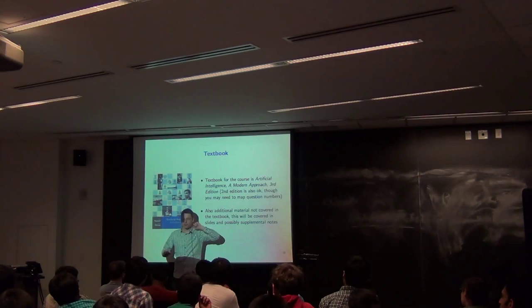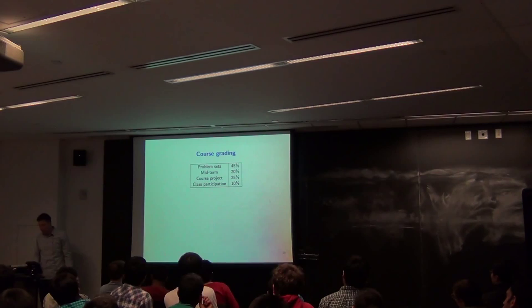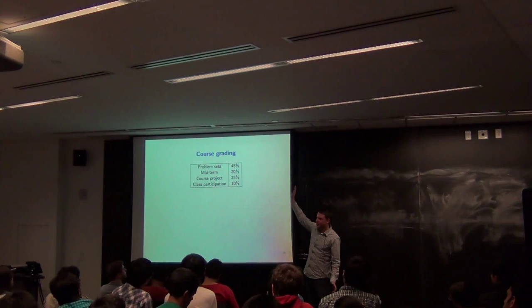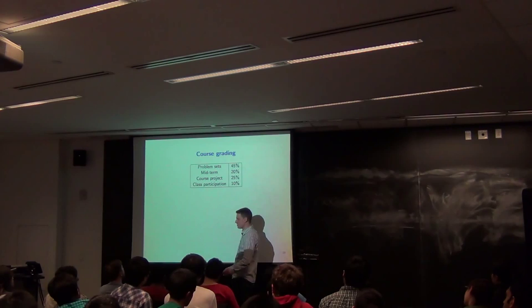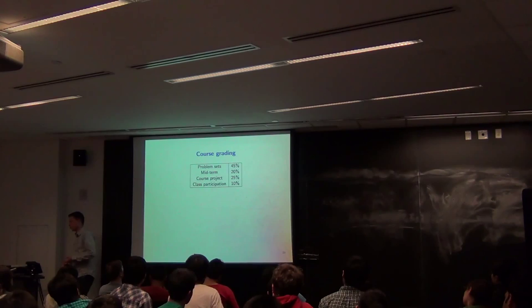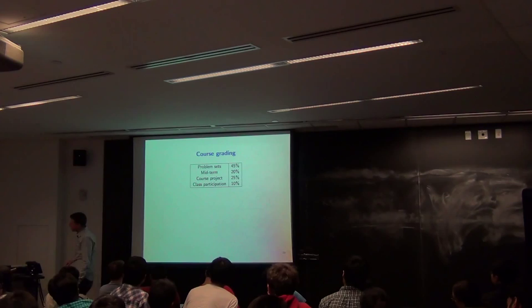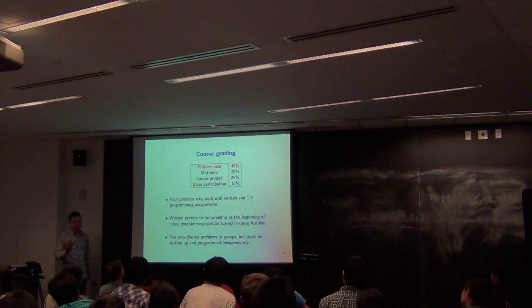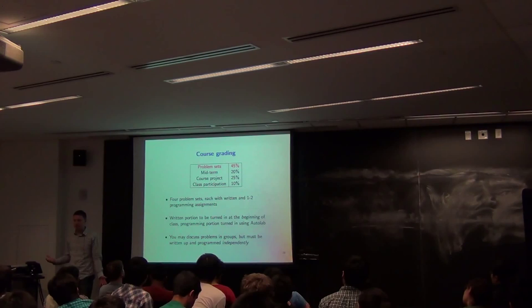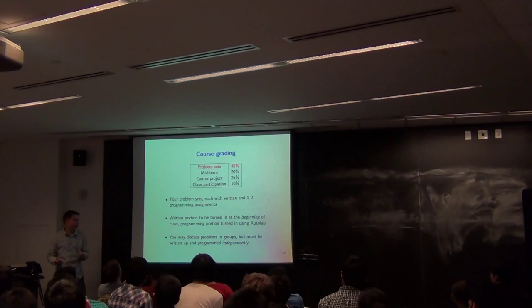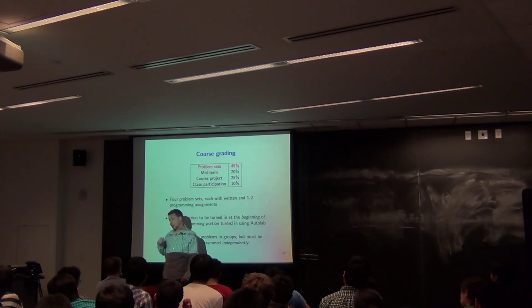The textbook is 'Artificial Intelligence: A Modern Approach' — the standard textbook for AI courses, used by roughly 50% of AI courses. It's a useful resource for reading up on what we cover, though we're not following it chapter by chapter, and some sections — like numerical optimization — are not in the textbook but are fundamental to current AI methods. Older editions are fine; the second edition is okay. For grading: problem sets are 45%, midterm is 20%, course project is 25%, and class participation is 10%.